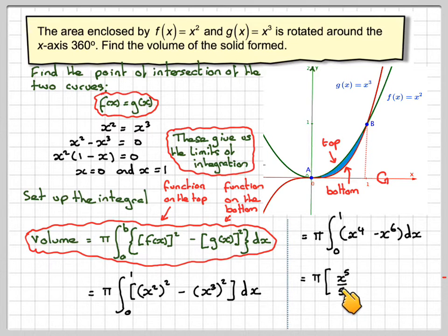So that's going to be π times, integrating now, x⁵/5 minus x⁷/7 between zero and one.